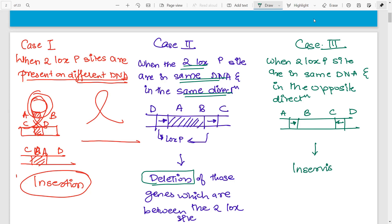What will get inverted? Again, those segments that are in the center will get inverted. A and D will be the same; however, what gets inverted is genes B and C.